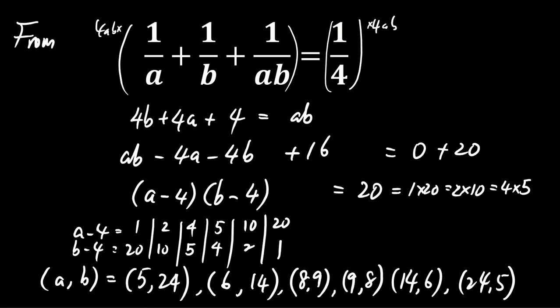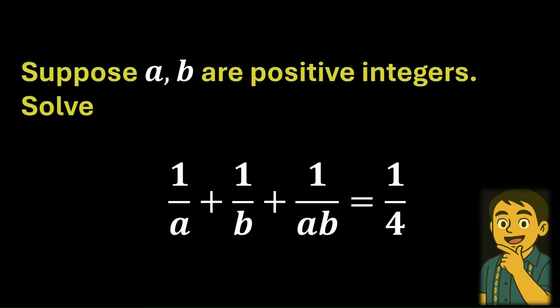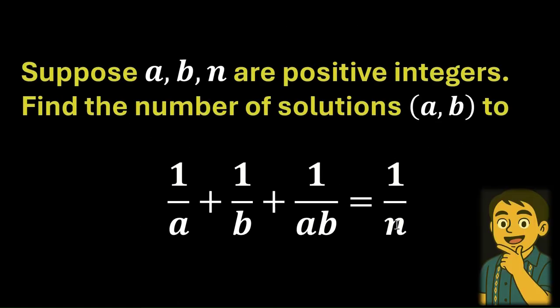We can modify this question a little bit to obtain a new question. Instead of 4, we can let it be a positive integer n. And we are asked to find the number of solutions (a, b) to this equation.